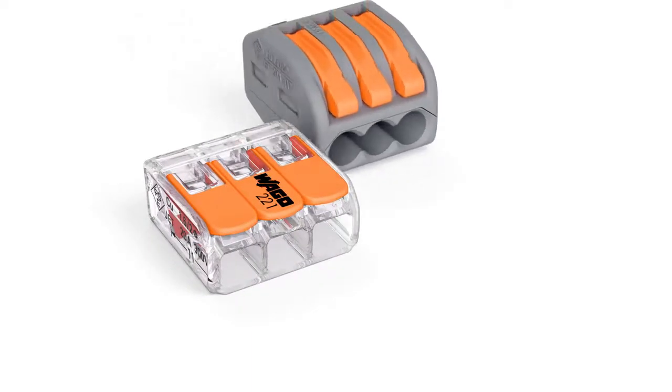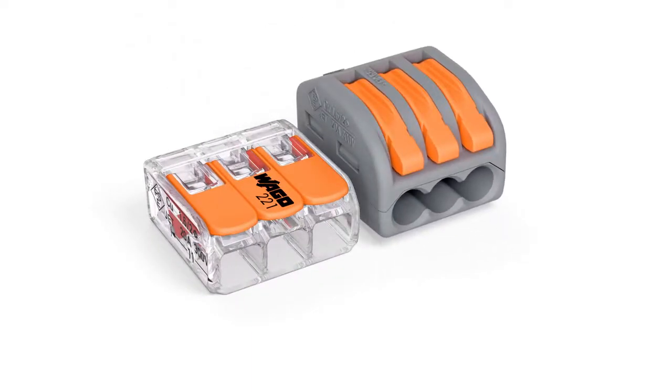Wago's 221 series compact splicing connector for all conductor types saves 40% more space than its predecessor, thanks to a significant reduction in size. This makes connections possible, even in the smallest, most difficult to access installations.